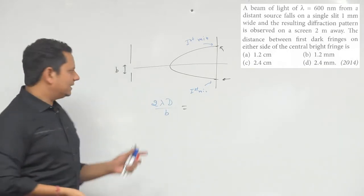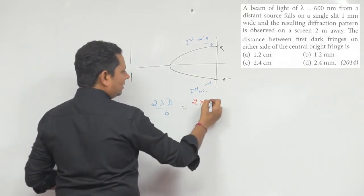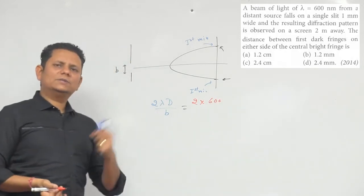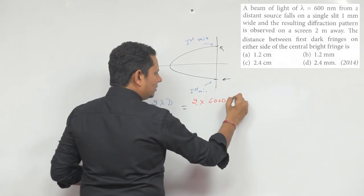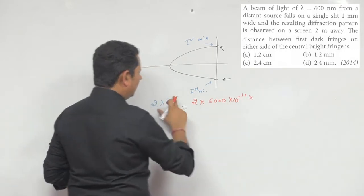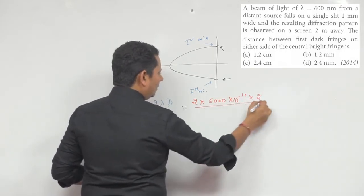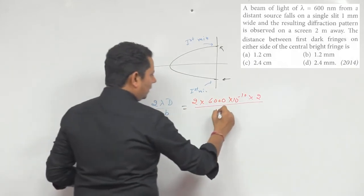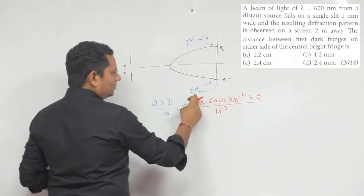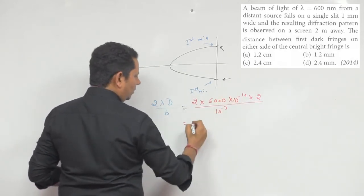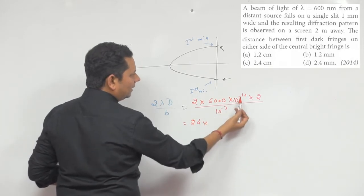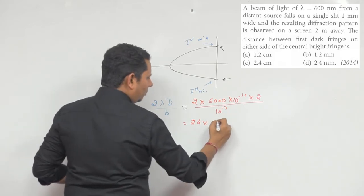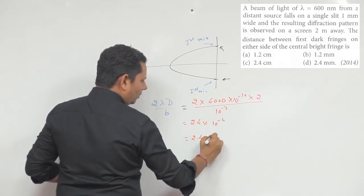The final answer: 2 multiplied by 600 nanometer, 6000 angstrom, 6000 multiplied by 10 to the power minus 10, multiplied by D. D is 2 meter. Divided by B - B value 1 mm, 10 to the power minus 3. Multiply 6, 12 to 24 multiplied by 10... 10 to the power minus 4. 2.4 mm.